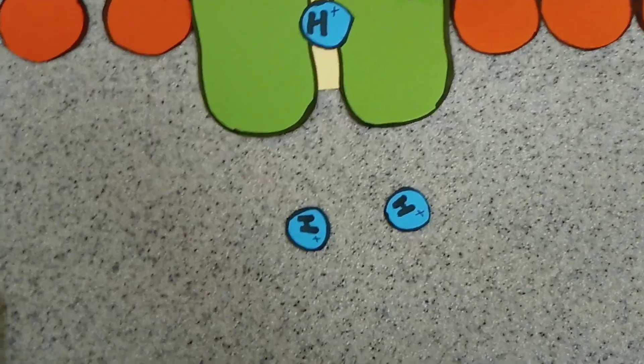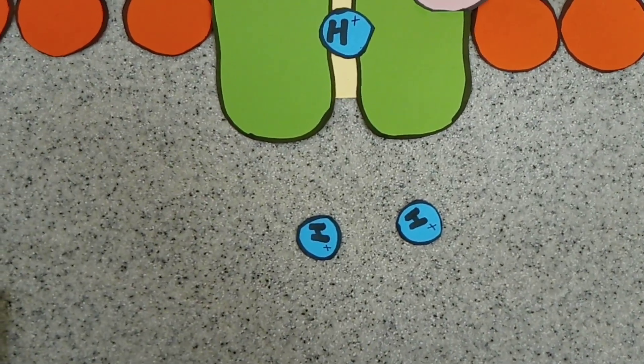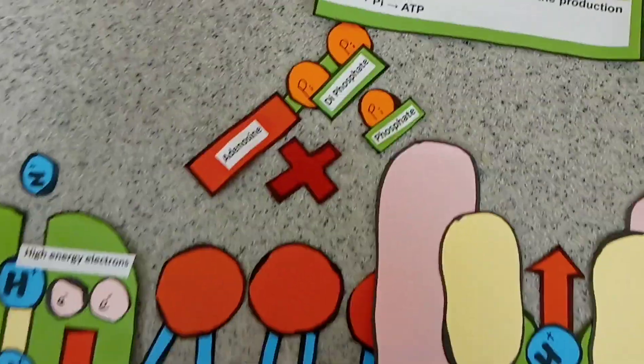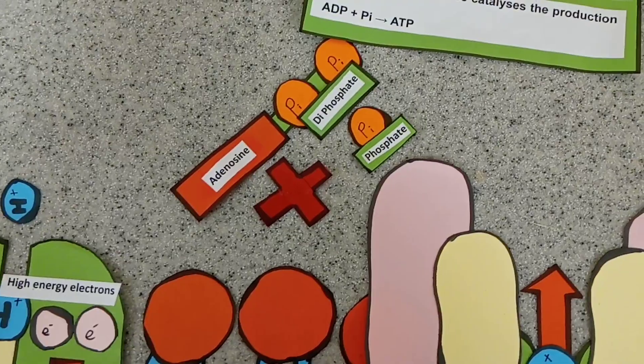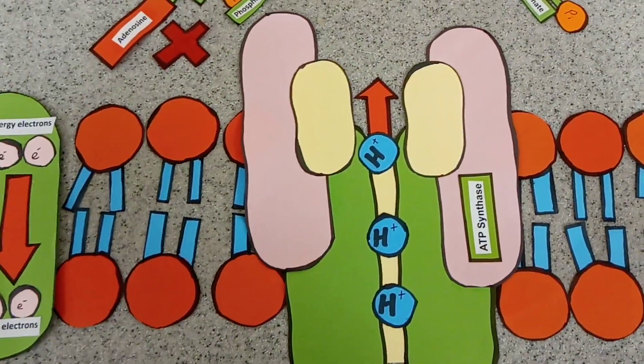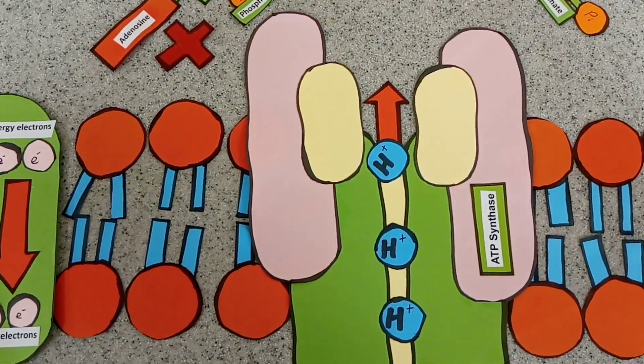We'll still build up a higher concentration of hydrogen ions which can move out through ATP synthase to combine ADP with an inorganic phosphate to make ATP. So that's just a quick overview about light-dependent photosynthesis.